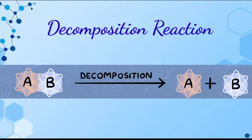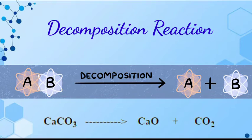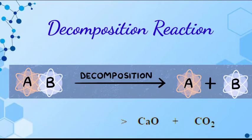Second example is calcium carbonate. If we apply heat, it changes into calcium oxide plus carbon dioxide. Calcium carbonate changes to calcium oxide plus carbon dioxide.